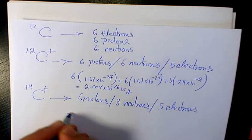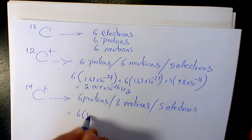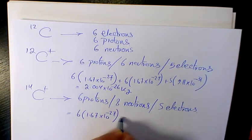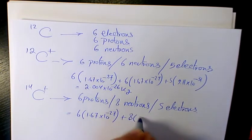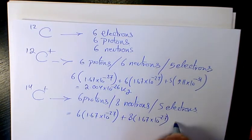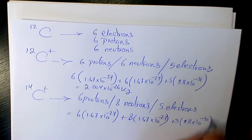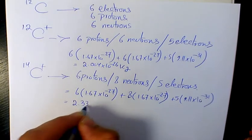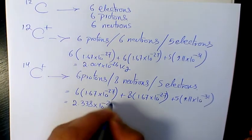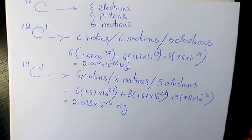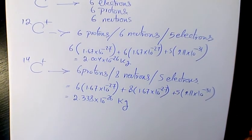For C14+, the mass is 6(1.67 × 10^-27) + 8(1.67 × 10^-27) + 5(9.11 × 10^-31) = 2.338 × 10^-26 kg.